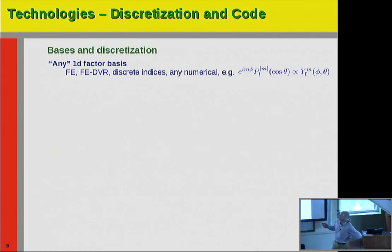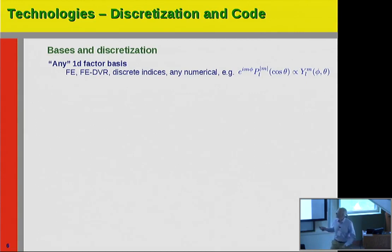For basis and discretization, this is a very abstract scheme, so we can plug in various things: finite elements, finite DVR, discrete indices — anything numerical. Here you need this dependency of hierarchy. This is the upper level, this is the lower level dependent on the upper level, and what you get is spherical harmonics in this case. We play these games in various contexts; it's quite useful.